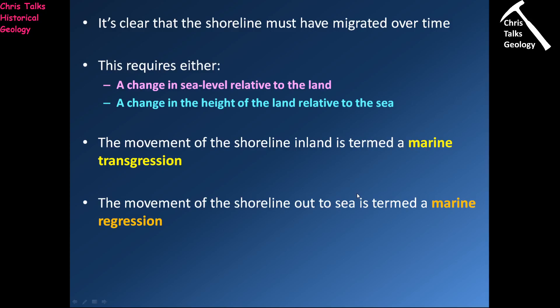What's clear is that shorelines must have migrated over time, which requires one of two things: either the sea level has changed relative to the land, or the land has changed height relative to the sea. Either way, you end up with a relative movement up or down. The movement of the shoreline inland — when the sea is covering the land — is termed a marine transgression. When the opposite occurs, with the shoreline moving out to sea and water leaving the land, that's a marine regression. Each of these two events produces a different sequence of rocks.